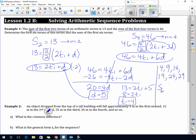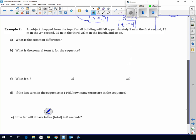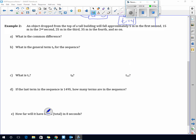An object dropped from the top of a tall building will fall approximately 5 meters in the first second. So that means they're giving you term 1 is 5, term 2 is 15, term 3 is 25. What's the common difference? D is 10, we're adding 10 each time.